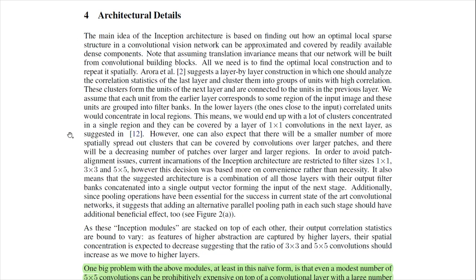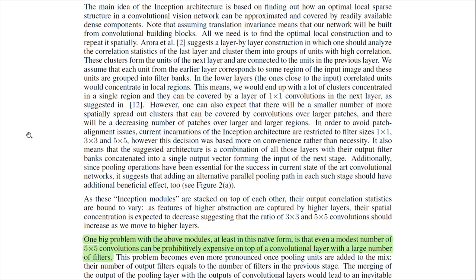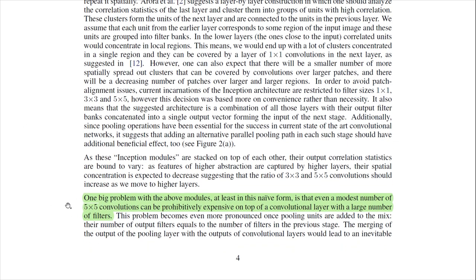The idea behind Inception Net was: how do we choose the kernel size? Is 3x3 a good kernel size? Is 5x5 good? The answer was: let's try all of them, and the network can by itself choose which is important. Maybe they're all important and can find interesting patterns using multiple kernel sizes. One big problem is that even a modest number of 5x5 convolutions can be prohibitively expensive on top of a layer with a large number of filters.